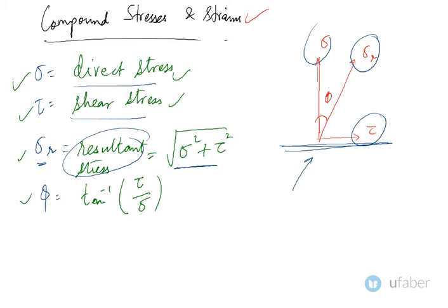And phi is the angle which is between the normal to the plane and the resultant stress axis, and this can be found by tan inverse of tau upon sigma.